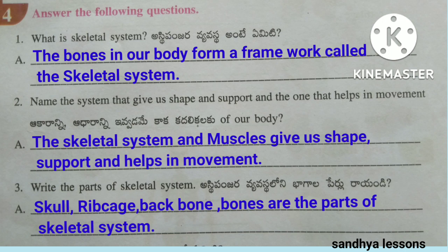Second question: Name the system that gives us shape and support and the one that helps in movement. The skeletal system and muscles give us shape, support, and help in movement. Third question: Write the parts of the skeletal system.